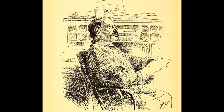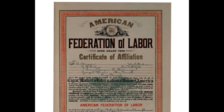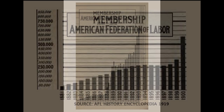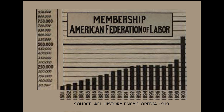Gompers believed that the cause of labor was best served by the union's fighting for small, obtainable goals. This strategy proved to be very successful. With the decline of the Knights, the AFL eventually became the dominant force in the American labor movement. By 1900, the AFL represented well over 500,000 members.